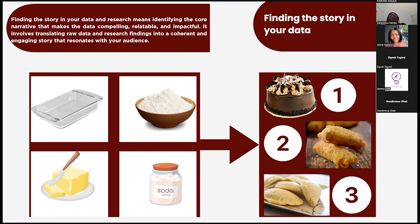What determines what you eventually go for is the context of what you're trying to say. If there's a birthday, the first thing that comes to mind is cake, not a meat roll. If you want to host your friends, the first thing is to make pies. The same applies to data — data can tell you different stories, and you are the one who needs to find the story that is in your data. How do you find it? It is your objective that defines the story you tell. If it's a birthday, bake a cake. If you're hosting friends, make a pie.